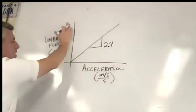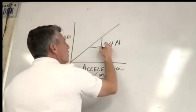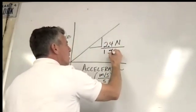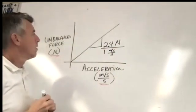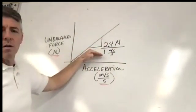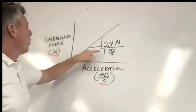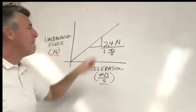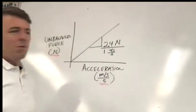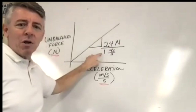2.4 what? That's going to be newtons over meters per second each second. Because the run is 2.4 and the run is one. So what does that mean — for every 2.4 newtons, what happens to the motion?